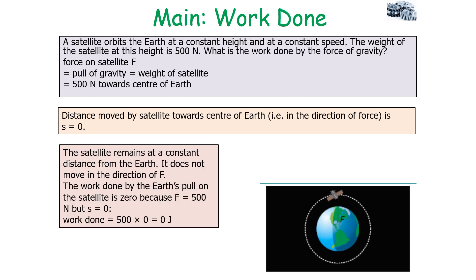A satellite orbits the Earth at a constant height and constant speed. Its weight at this height is 500 newtons. What is the work done by gravity? The force is 500 newtons towards the centre of the Earth, but the distance moved by the satellite towards the centre of the Earth is zero — it remains at a constant distance. So the work done is 500 times zero, which equals zero joules.